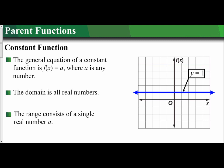Let's first start with our constant function. A constant function — the general equation for the parent function is f of x equals a, which means y equals a, where a is any number. We've learned before in previous lessons that y equals a is a horizontal line. So if I look over on my graph, I see y equals 1, so it's a horizontal line through 1.